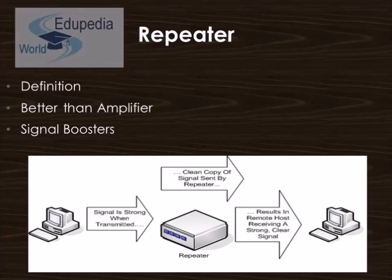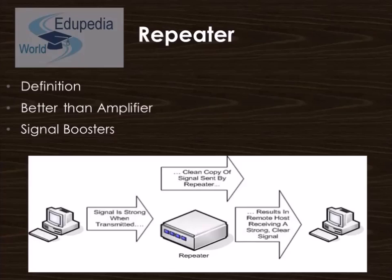The first and foremost is the Repeater. It is a network device that retransmits a received signal with more power into an extended geographical or topological network boundary than what would be capable with the original signal. It is implemented in computer networks to expand the coverage area of the network, repropagate a weak or broken signal, and service remote nodes. They basically amplify the received input signal to a higher frequency domain so that it is reusable.